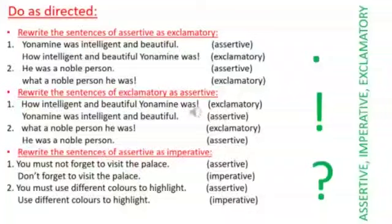See the next one. Rewrite the sentences of assertive as imperative. Imperative means you are giving some command, isn't it? Some command sentence, that is called imperative sentences. Imperative sentences make a request or give a command or an instruction. It can be affirmative or negative and always it will end with full stop. Let's see. You must not forget to visit the palace, that is assertive. Now you will say as imperative. Don't forget to visit the palace. Next one. You must use different colors to highlight. If you say it is an instruction or a command, then you will say use different colors to highlight.